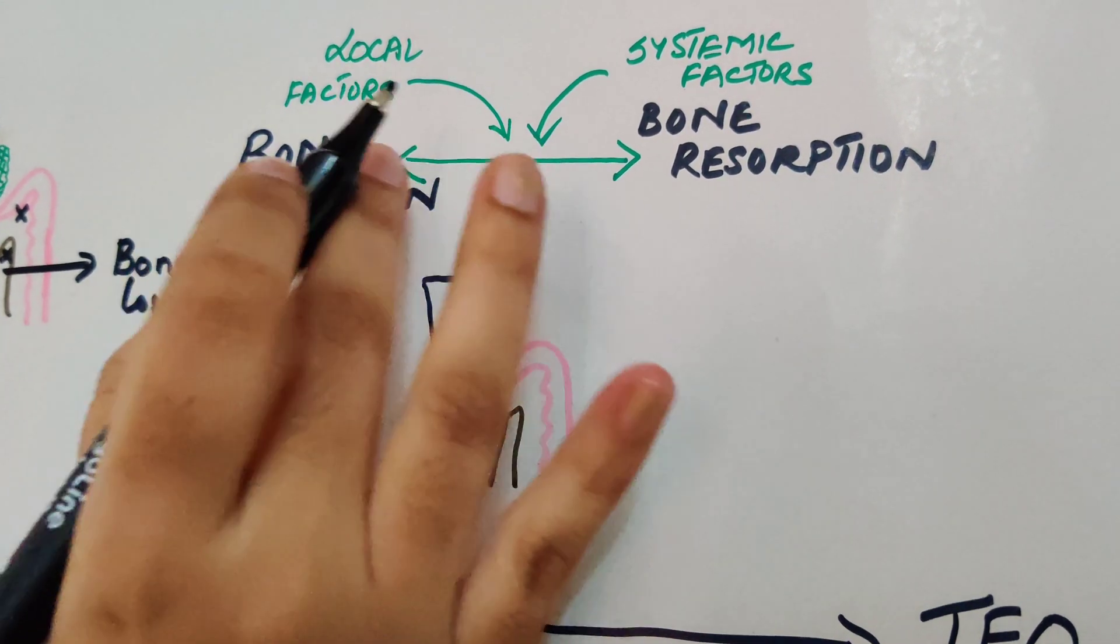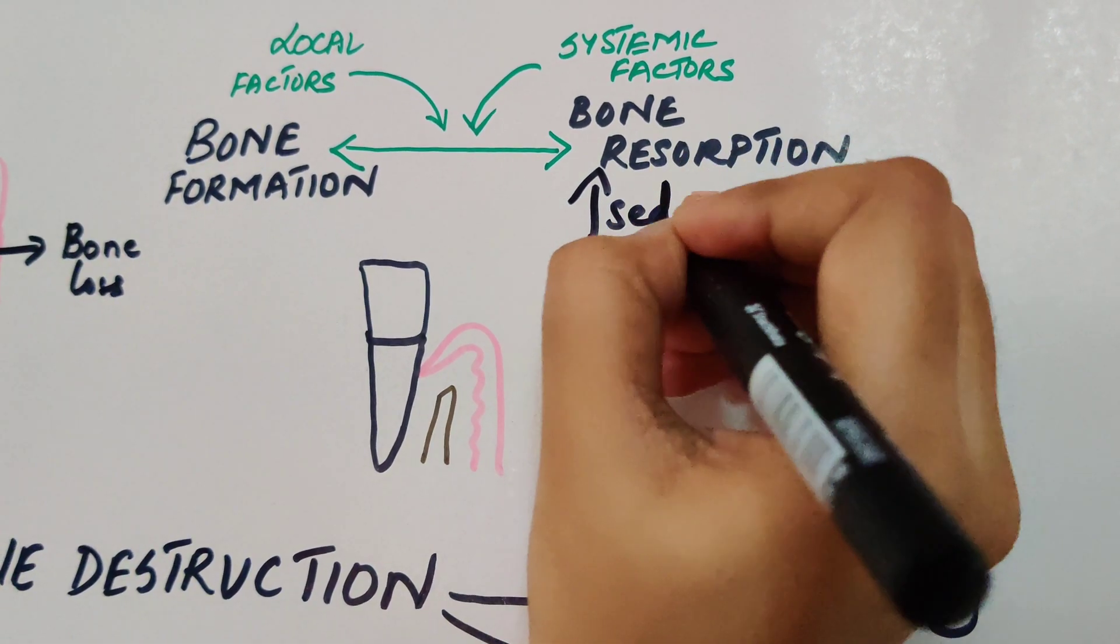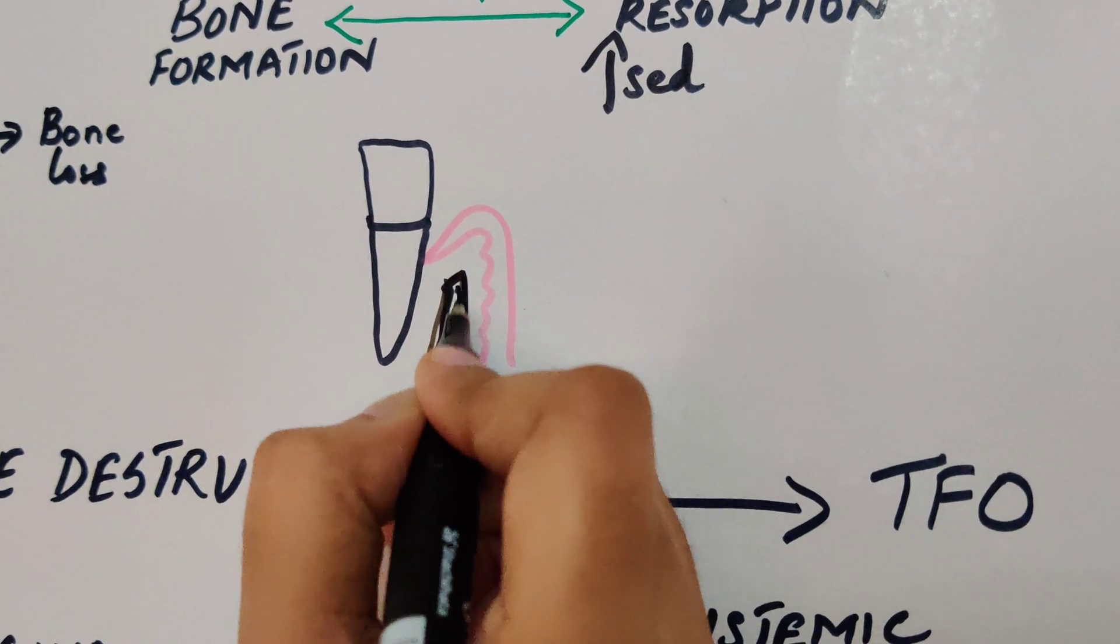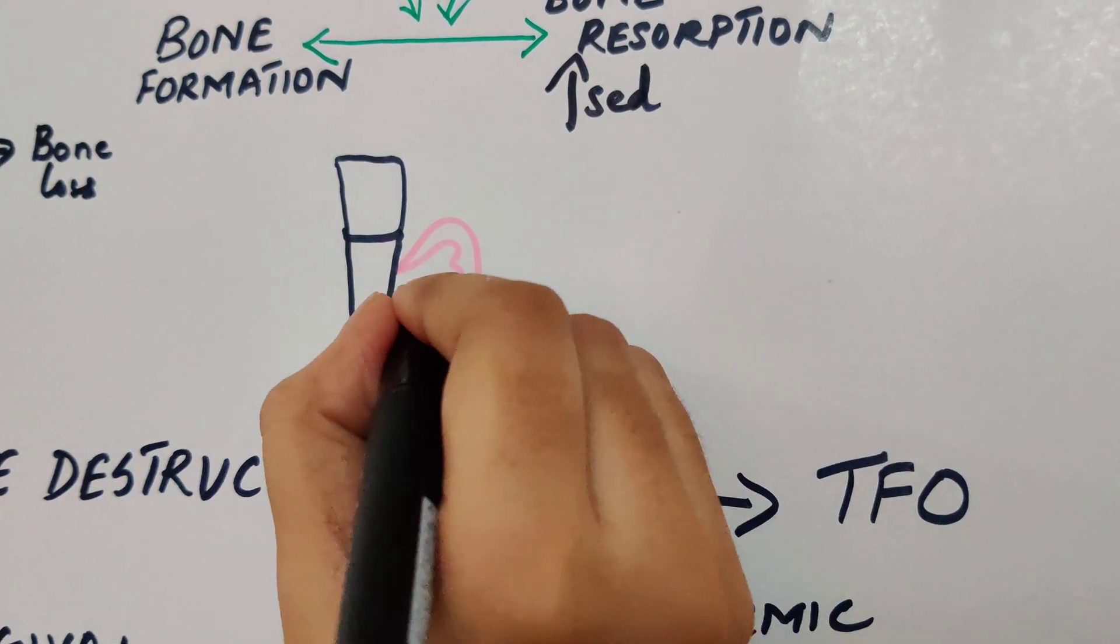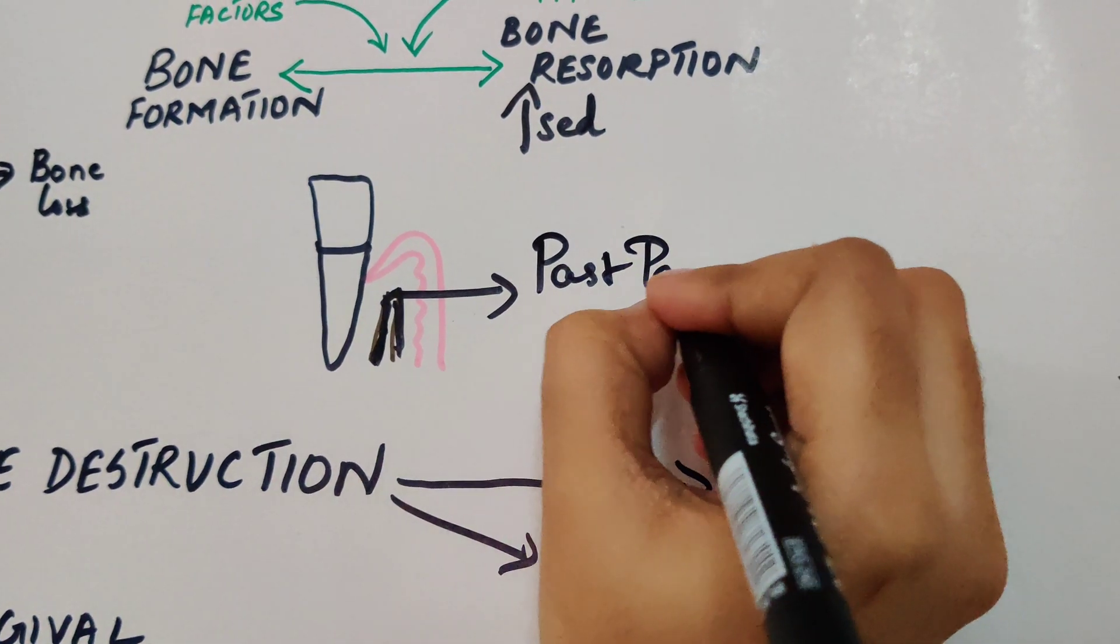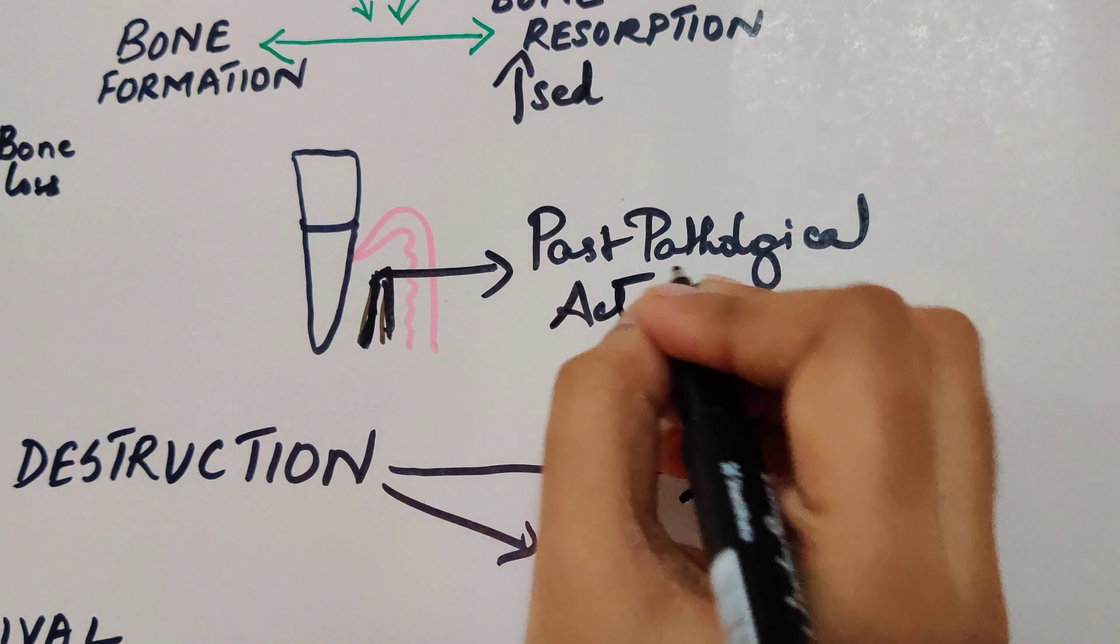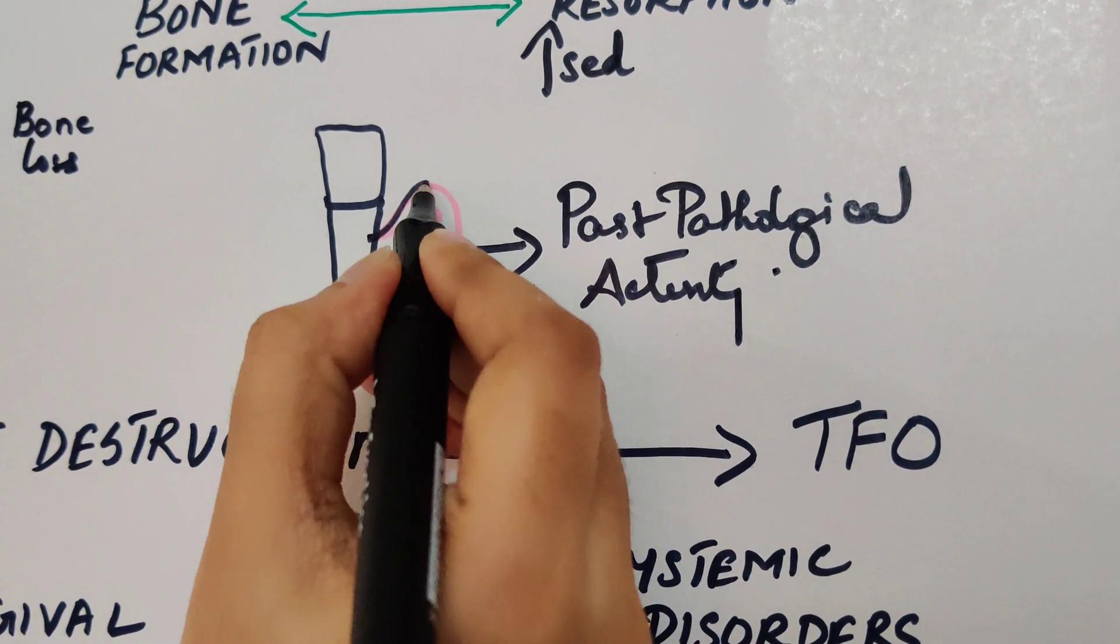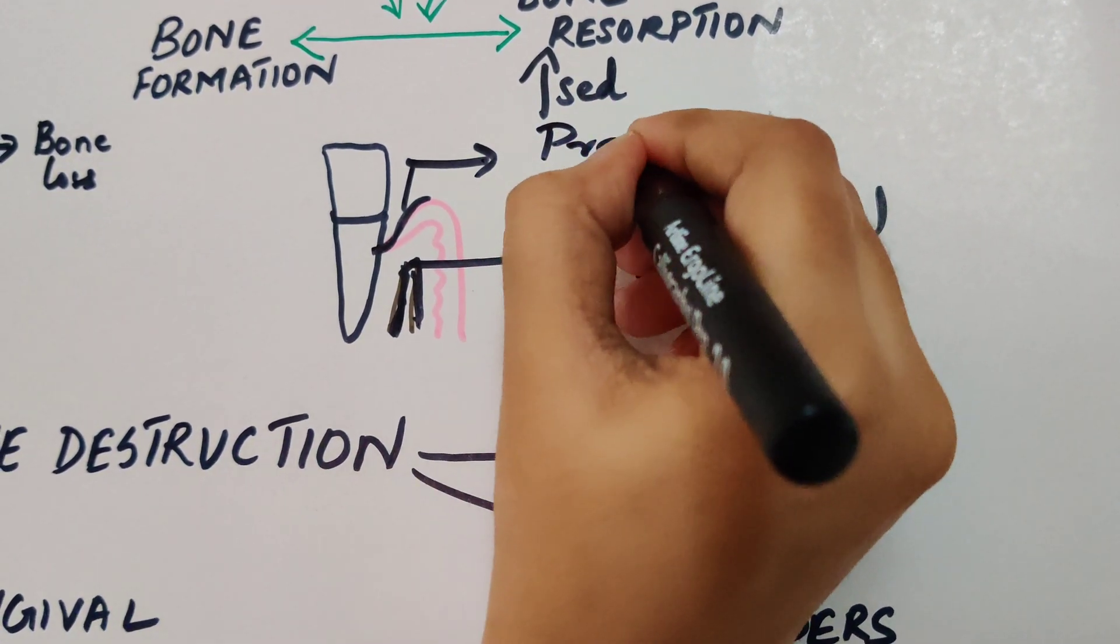But once this equilibrium is disturbed, meaning bone resorption gets increased, naturally your density and the height of the bone gets reduced. Now the level of bone actually tells us whether there is any past pathological activity. But only if we see through the changes which is happening in the soft tissue wall of the pocket, we'll get to know if there is any present inflammatory condition.